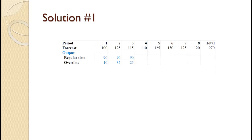In period 3, we produce the full 90 in regular time. That leaves 115 minus 90 equals 25 to be produced in overtime. In period 4, we produce the full 90 in regular production. That leaves 110 minus 90 equals 20 to be produced in overtime. For period 5, we produce the full 90 in regular production. That leaves 125 minus 90 equals 35 to be produced in overtime.